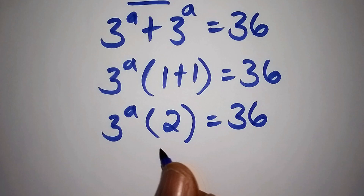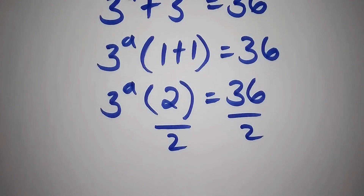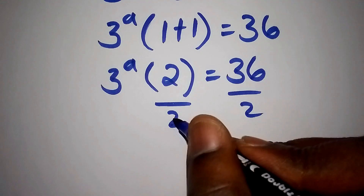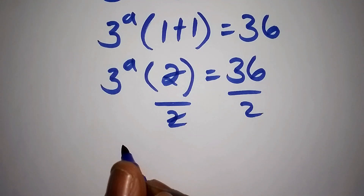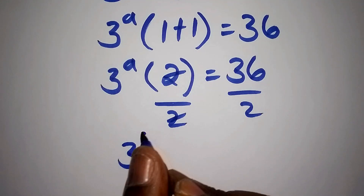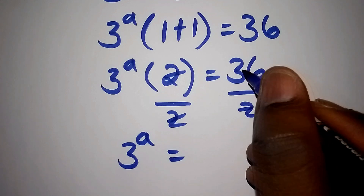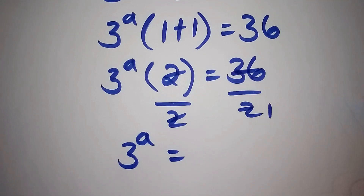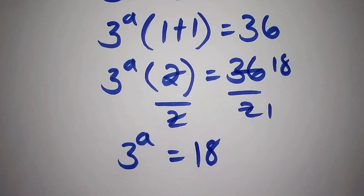From here we divide both sides by 2. The 2s cancel, so we remain with 3 to the power of a equals 36 divided by 2, which gives us 3 to the power of a equals 18.